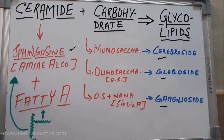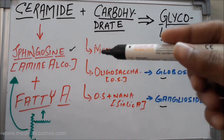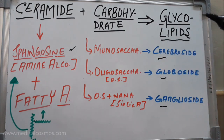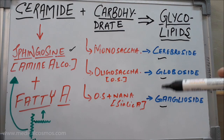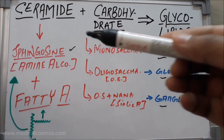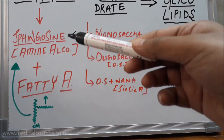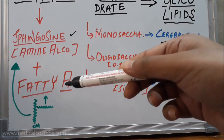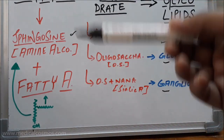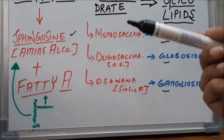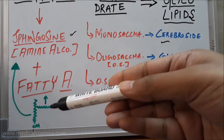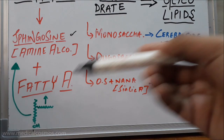Glycolipids basically work as receptors, among other functions. Here we have a quick overview of the formation of the glycolipids — the cerebroside, globoside, and ganglioside. You can see a ceramide, which we have already discussed in prior videos. It is formed with a sphingosine and fatty acids. You can reinforce this concept by thinking of triglycerides, which are formed from propane-1,2,3-triol and fatty acids.